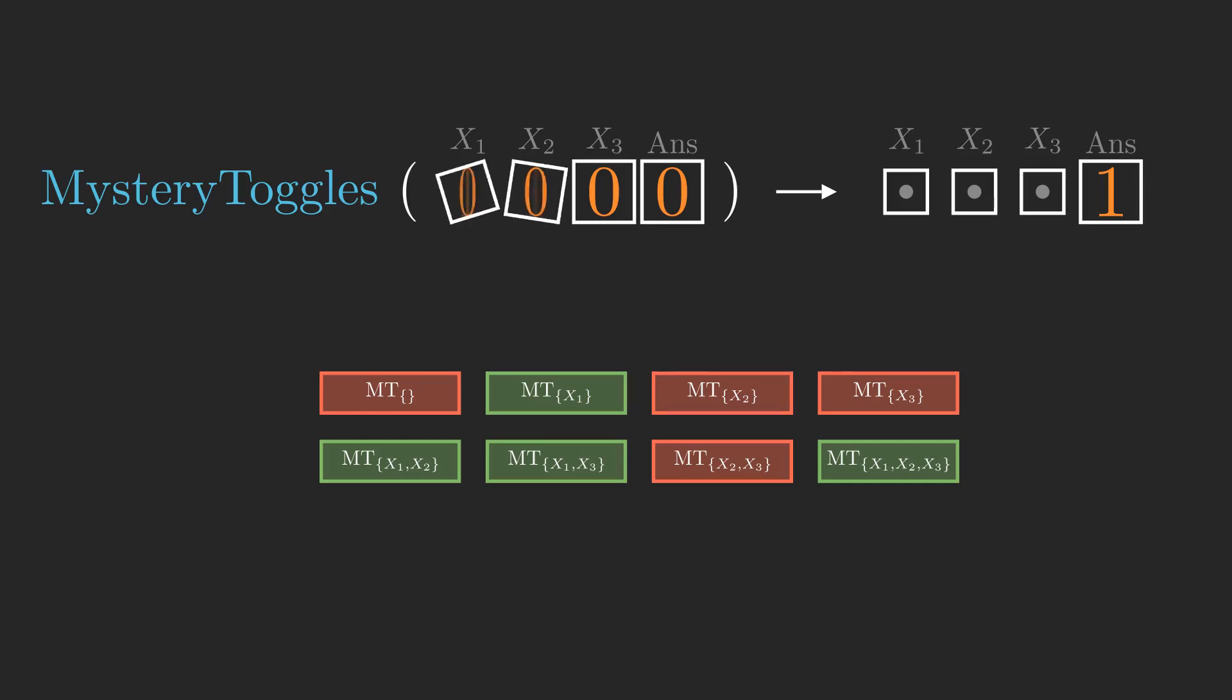To proceed with our plan, let's try toggling x2 this time. Suppose we call mystery toggles now and we see a zero. Then we know the line for x2 is missing, since answer was not toggled. We can repeat the same process until we are left with just one option.